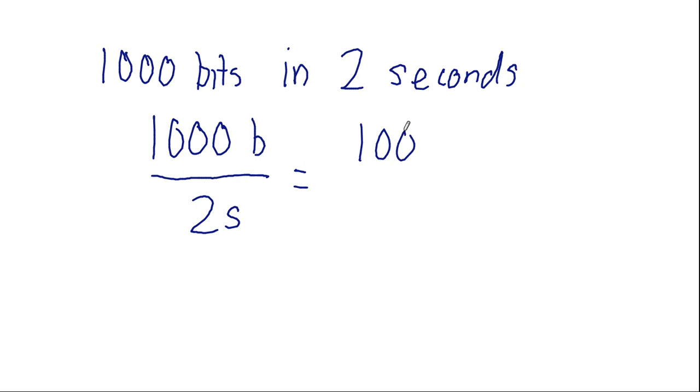Which is 1,000 divided by 2, and b, the bits, divided by seconds, s, which gives 500 bits per second. So you can see when you perform the calculations, when you use different units, we can derive the final unit for the answer. In this case, we have a quantity measured in bits and another in seconds, and the final answer is bits per second.